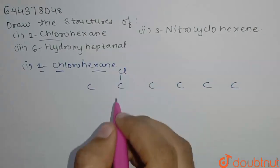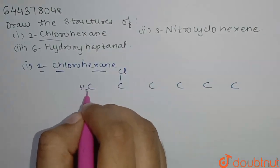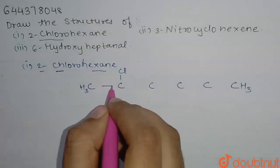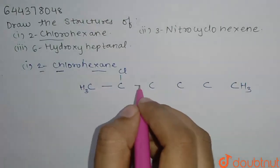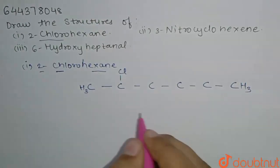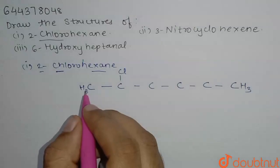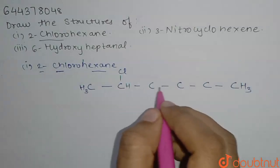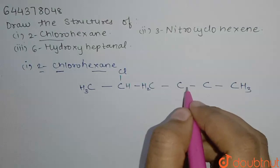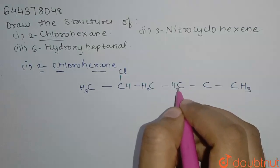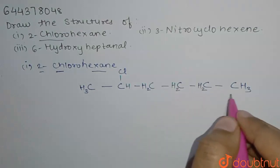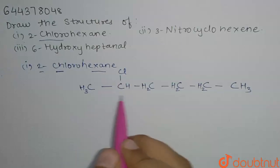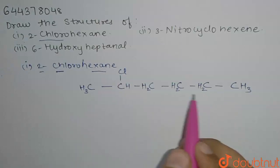Now we will satisfy the valence of carbon with hydrogen. So here we have these bonds, and now we will write hydrogen: carbon 1 has H3, carbon 2 has H, carbon 3 has H2, carbon 4 has H2, carbon 5 has H2, and carbon 6 is CH3. So this is the correct structure for 2-chlorohexane.